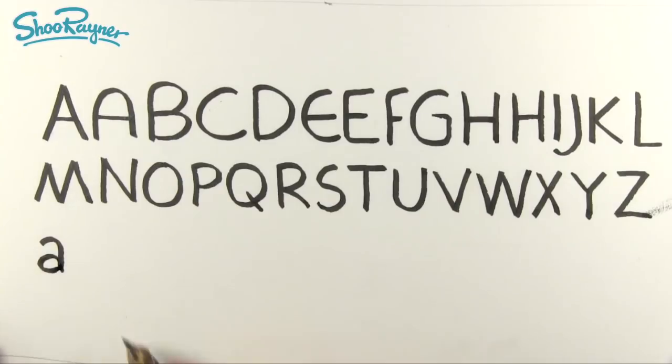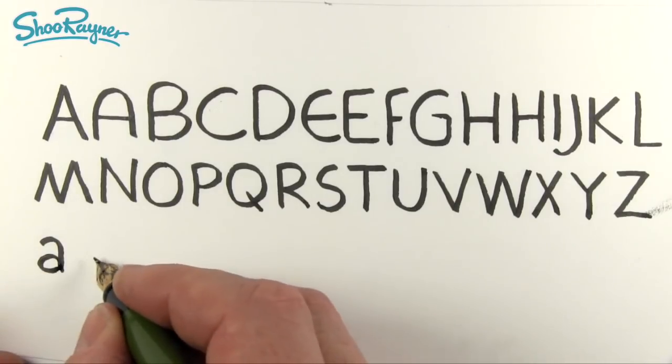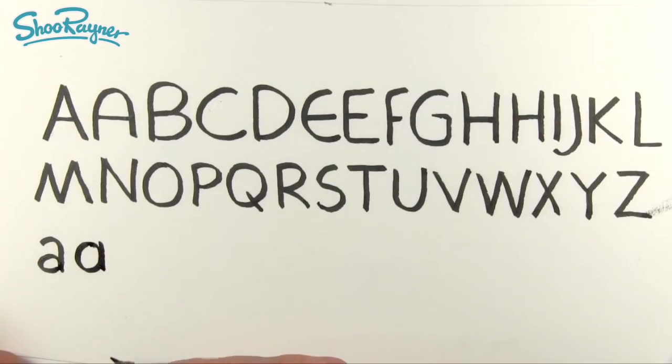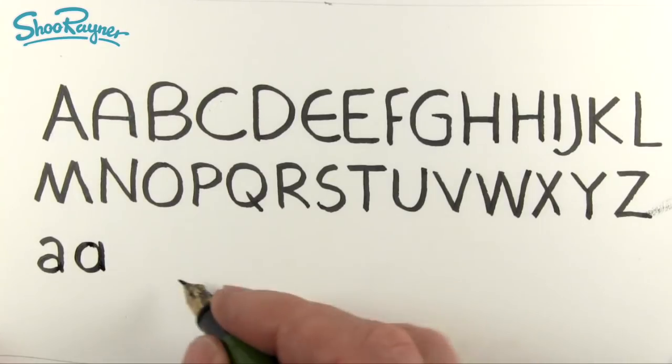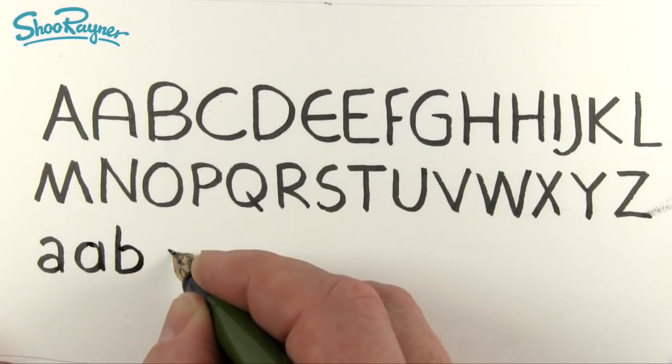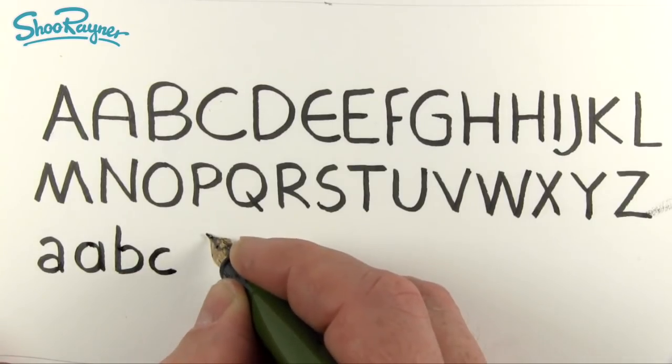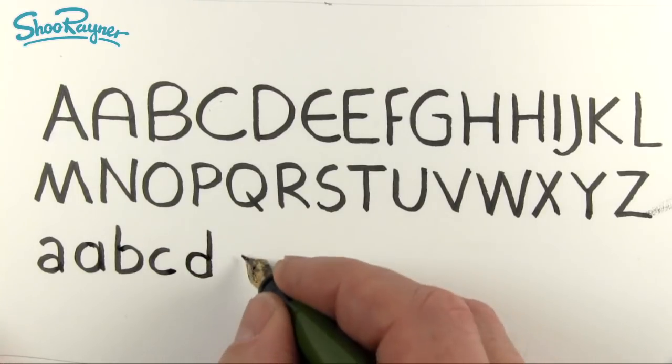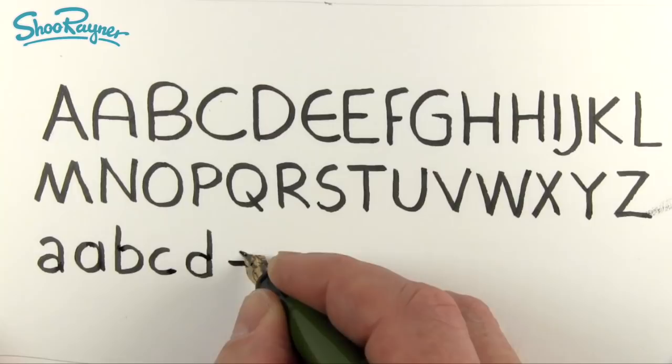B, again, is down and around. C and D is going to be down and around. E, go across and then around.